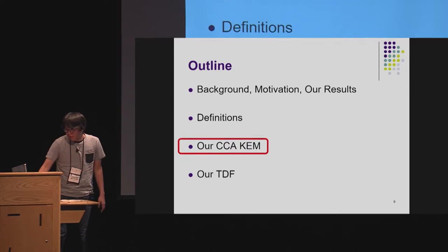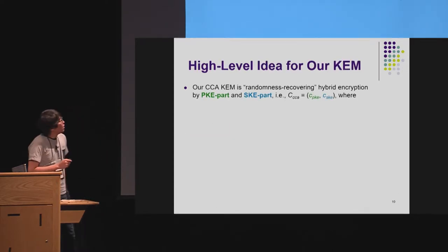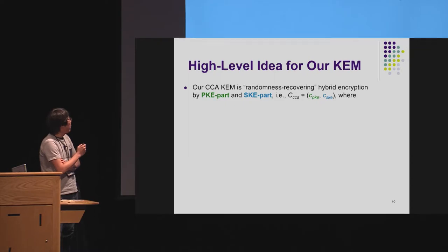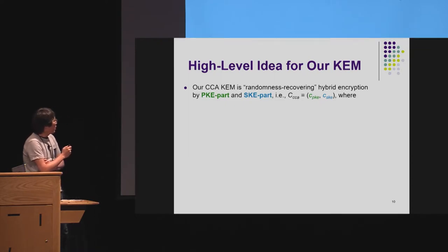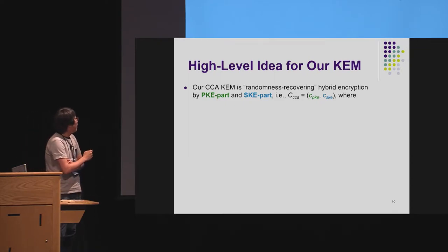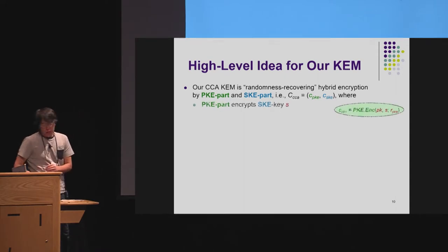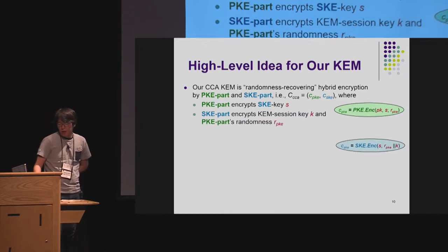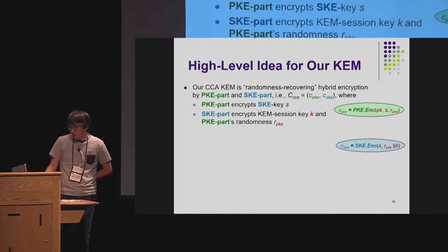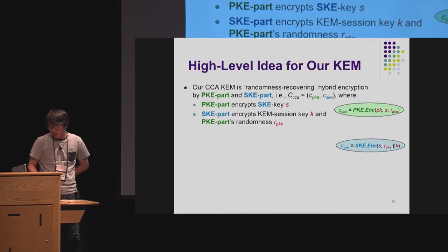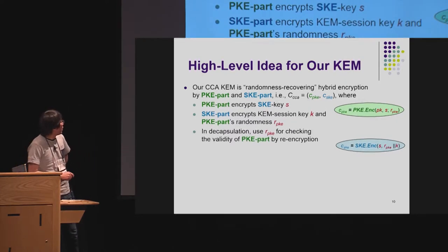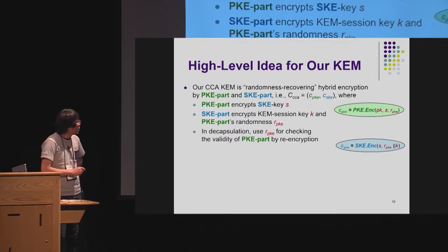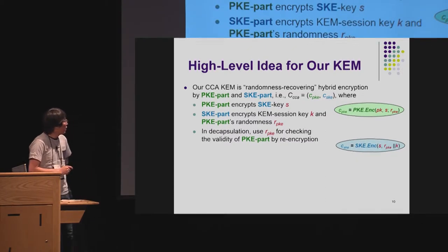Let me explain our KEM. At a high level, our KEM is like a randomness-recovering hybrid encryption consisting of a PKE part and an SKE part, where the PKE part encrypts the SKE key S, and the SKE part encrypts the KEM session key K and the PKE randomness R_PKE. In the decryption, we also recover this R_PKE, and we use it for checking the validity of the PKE part by re-encryption.